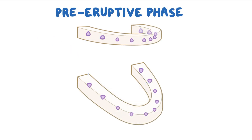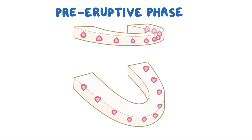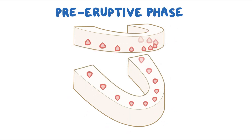Lengthening of the jaw bones allows the anterior tooth germs to move mesially, or forward, and the molar tooth germs to move distally, or backward. At the same time, as the bone widens, the tooth germs move buccally, or outward, and as the height increases, the tooth germs move closer to the surface — that is, the mandibular tooth germs move upwards and the maxillary tooth germs move downwards.